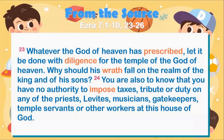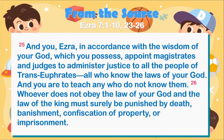Verses 23 through 26: Whatever the God of heaven has prescribed, let it be done with diligence for the temple of the God of heaven. Why should his wrath fall upon the realm of the king and of his sons? You are also to know that you have no authority to impose taxes, tribute, or duty on any of the priests, Levites, musicians, gatekeepers, temple servants, or other workers at this house of God. And you, Ezra, in accordance with the wisdom of your God, appoint magistrates and judges to administer justice to all the people. Teach any who do not know the laws of your God. Whoever does not obey the law of your God and the law of the king must surely be punished by death, banishment, confiscation of property, or imprisonment.